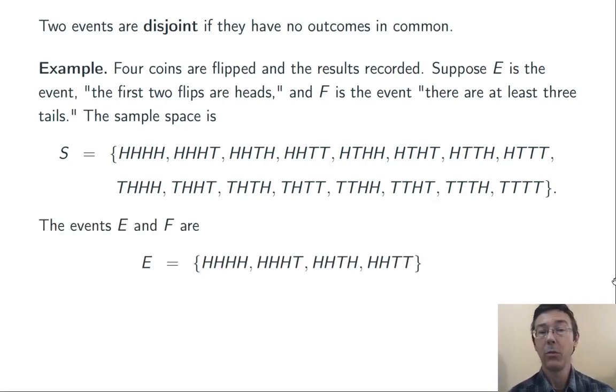E and F can be written as follows. E, the event the first 2 flips are heads, has 4 outcomes in that event. Things like heads, heads, heads, heads, and heads, heads, heads, tails. And F, that there are at least 3 tails, can be written like this. Here we have 5 outcomes: 4 where we have 3 tails, and a 5th where we have 4 tails.